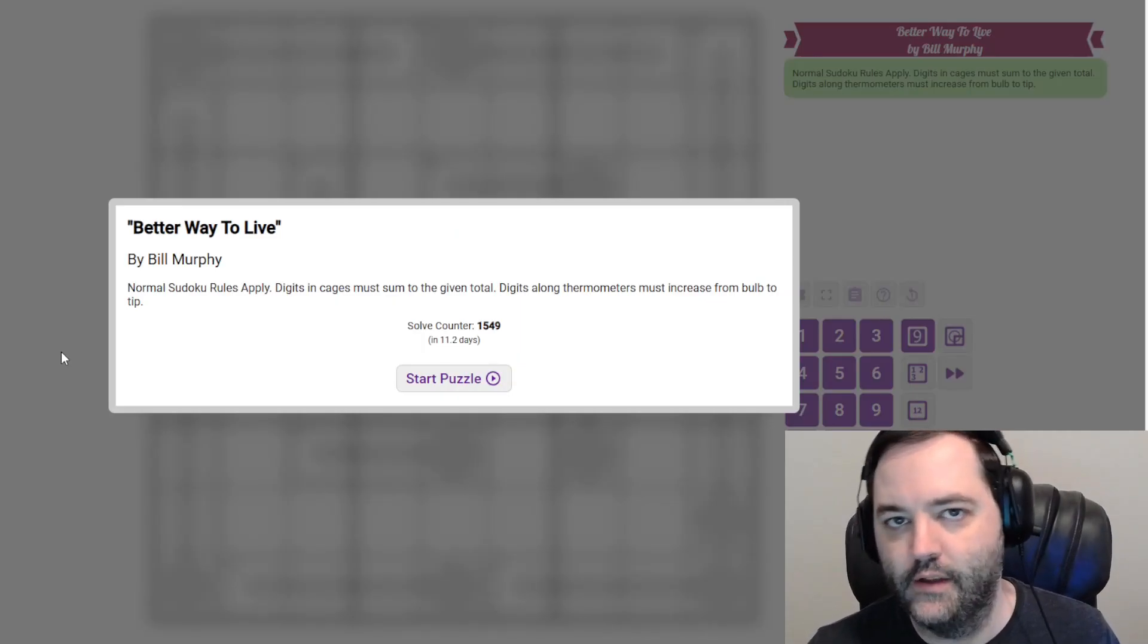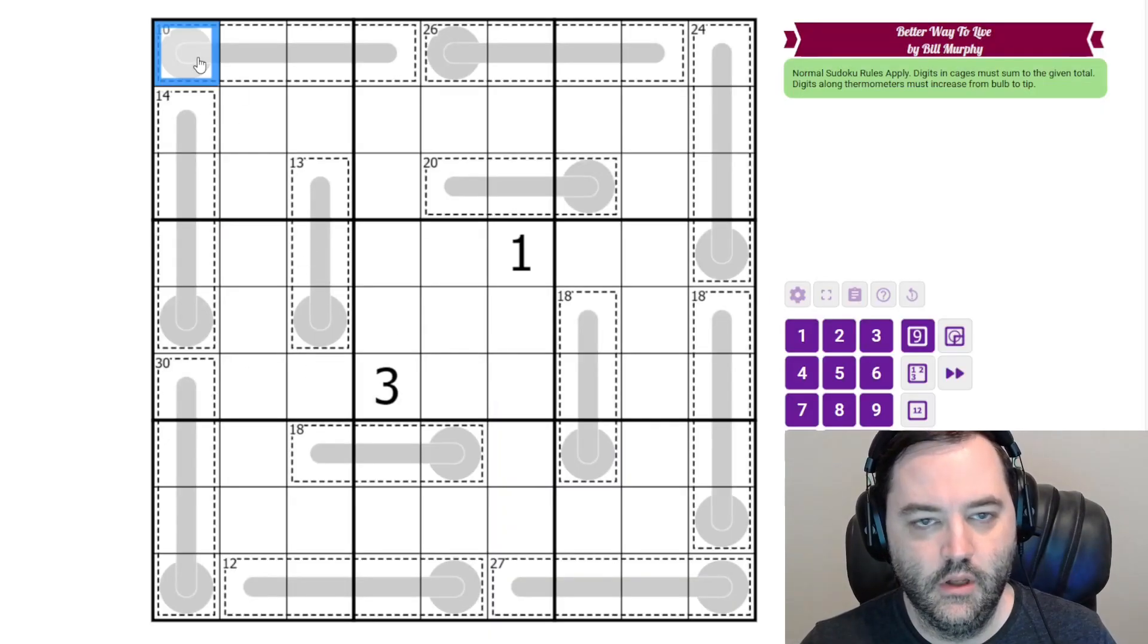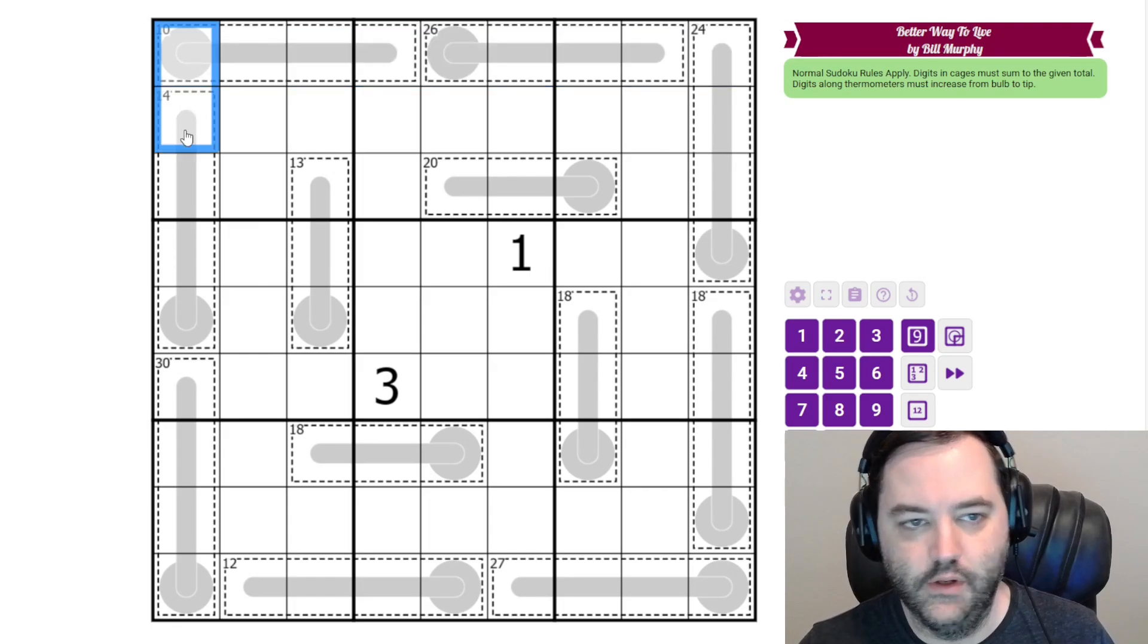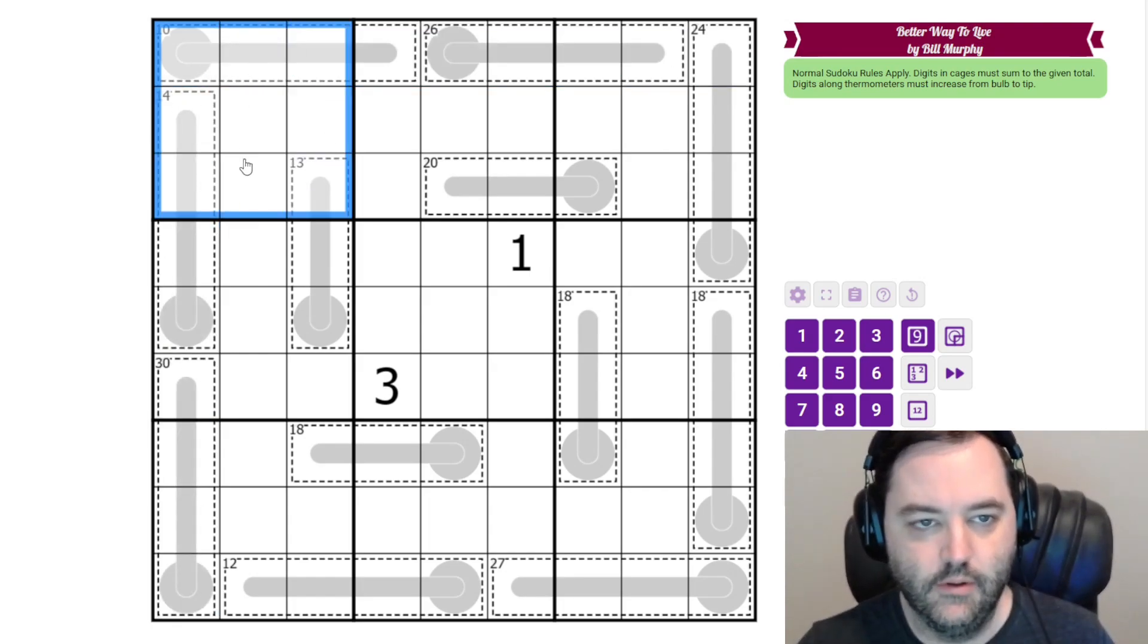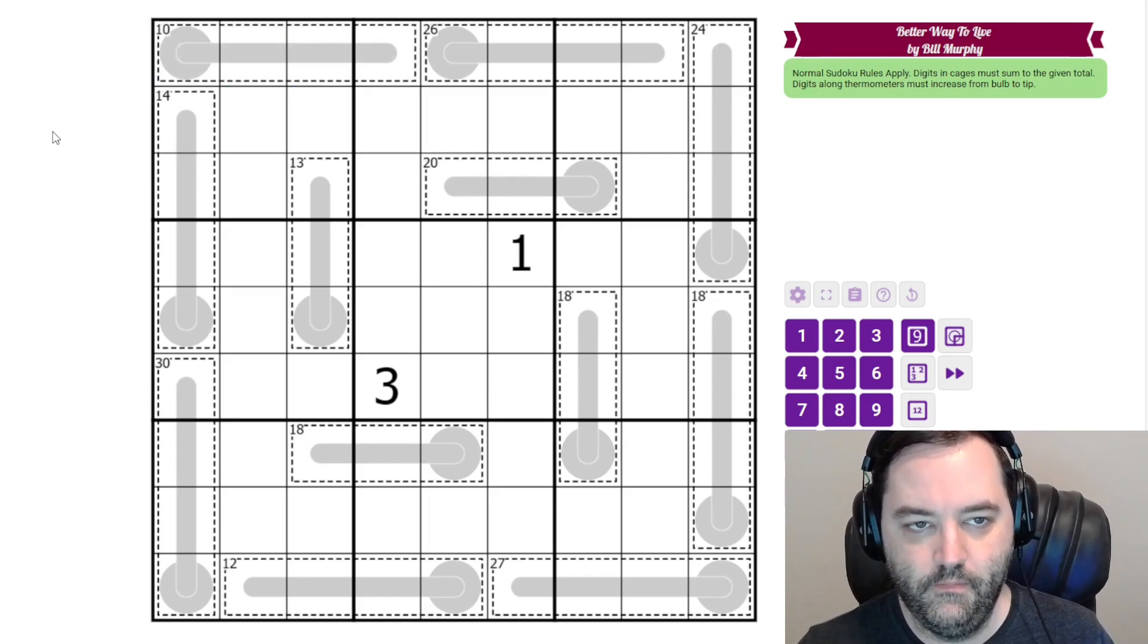Hi everyone, this is the gas walk through for April 17th. I'm Philip Newman. I will be solving Better Way to Live by Bill Murphy, and this is a killer thermosudoku. So normal Sudoku rules, one to nine in each row, column, and three by three box. Additionally, we have cages, and the digits within a cage must sum to the total given in the top left corner, and all of these cages have thermometers in them, so the digits must increase from the bulb to the tip.